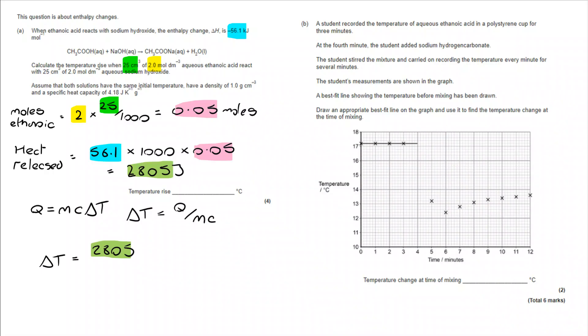My Q value, 2805, divided by 50. And the 50 comes from the sum of the volumes of the two solutions. So, 50 centimetres cubed with a density of 1, 50 grams. And I'm multiplying that by 4.18, which is the value that's been provided here for specific heat capacity. That helps me, takes me to a delta T value of plus 13.4 degrees C.